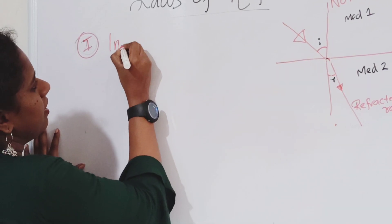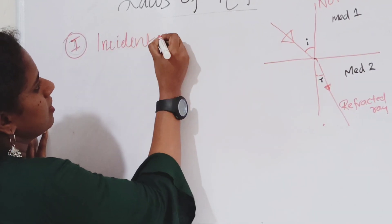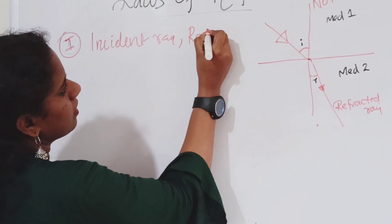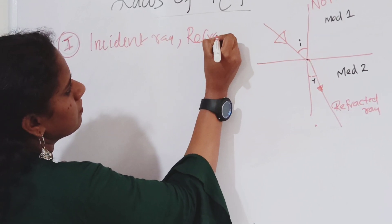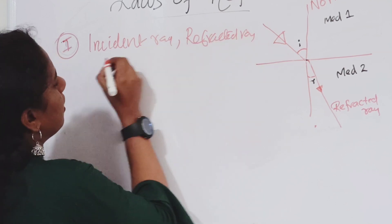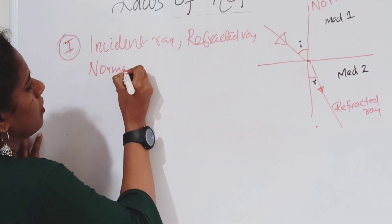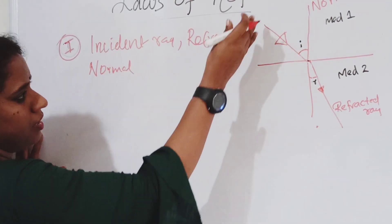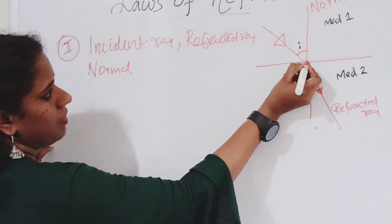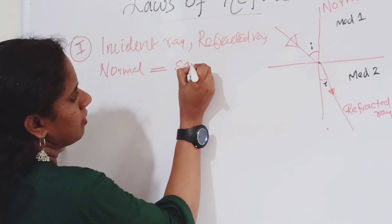The incident ray, the refracted ray, and the normal to the surface of separation at the point of incidence all lie in the same plane.